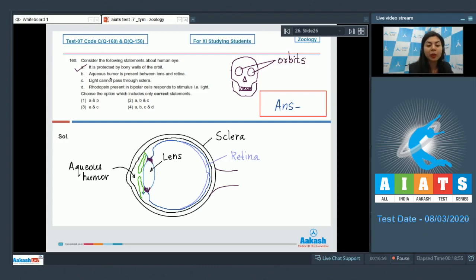Statement B, aqueous humor is present between lens and retina - this is incorrect. So it is present in the anterior chamber, while vitreous humor is present in the posterior chamber of the eye, that is between lens and retina. Statement C, light cannot pass through sclera - this is true. Sclera is the dense layer of connective tissue through which light cannot pass. A modification of sclera in the anterior region is cornea, which allows passage of light, but sclera does not permit passage of light.